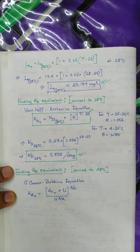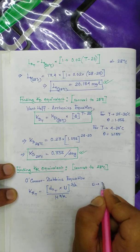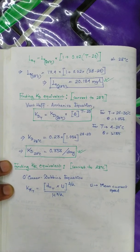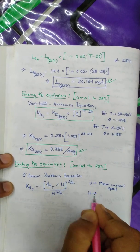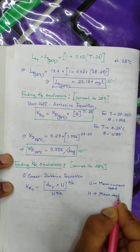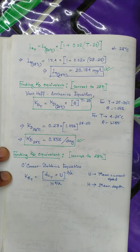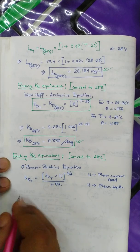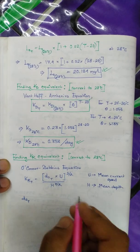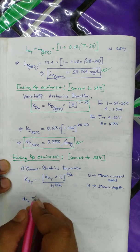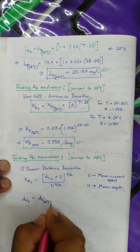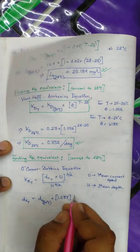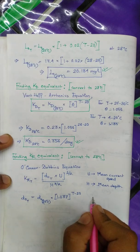Here u is the mean current speed — in engineering hydrology the u factor was about wind speed, but here it is current speed. h is the mean depth. These two factors are constant. The only variant is d₀(T), the molecular diffusion coefficient at temperature T. Its formula is: d₀(T) equals d₀ at 20°C multiplied by 1.037 to the power (T minus 20).